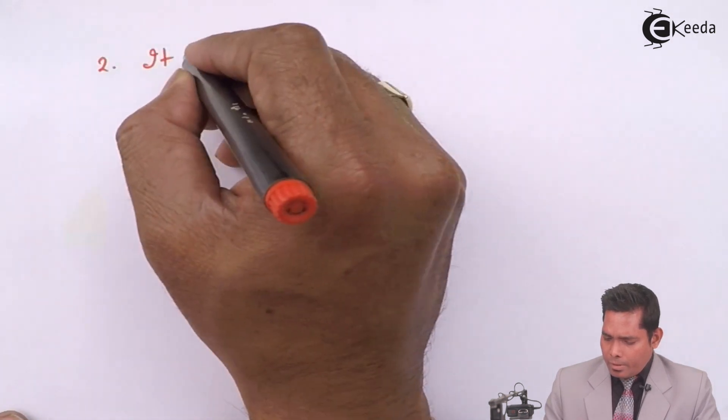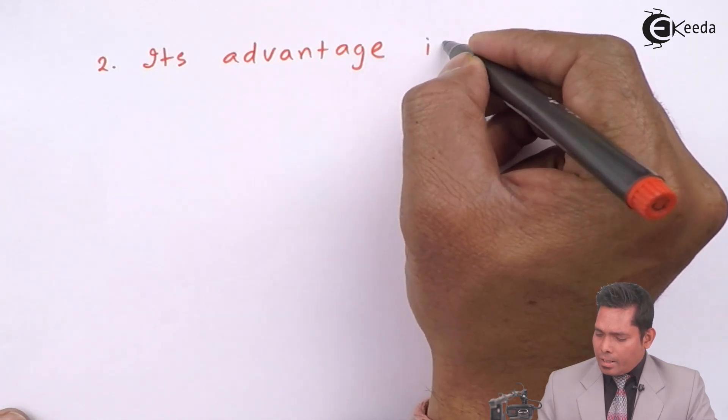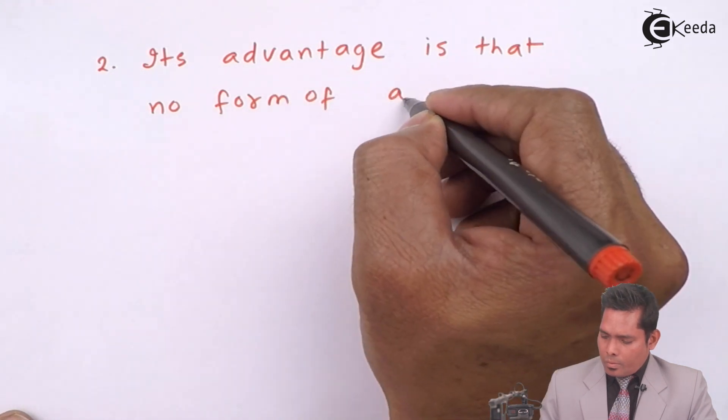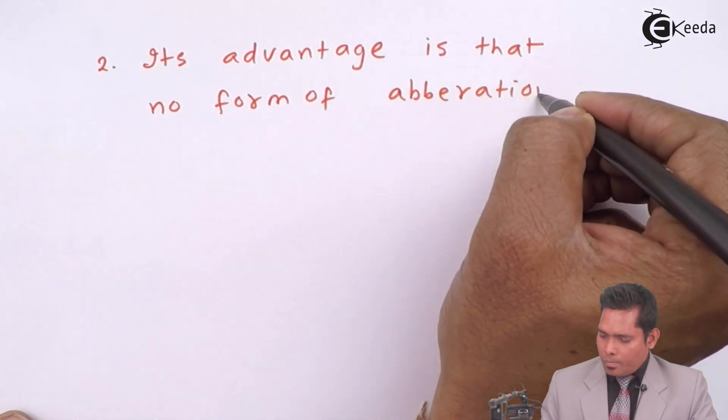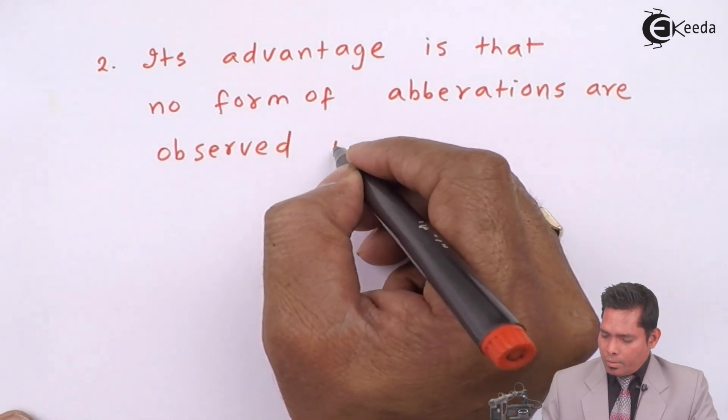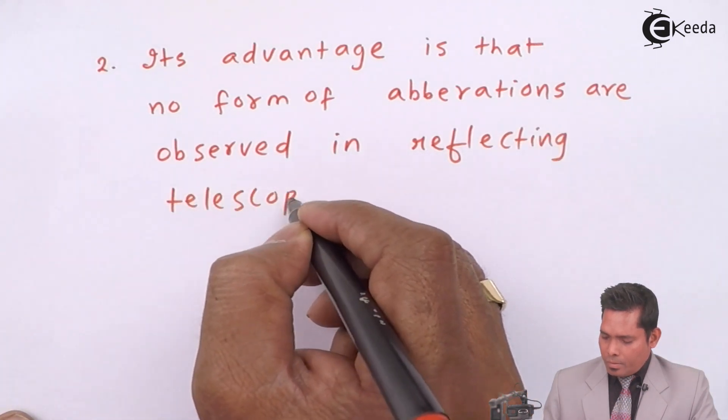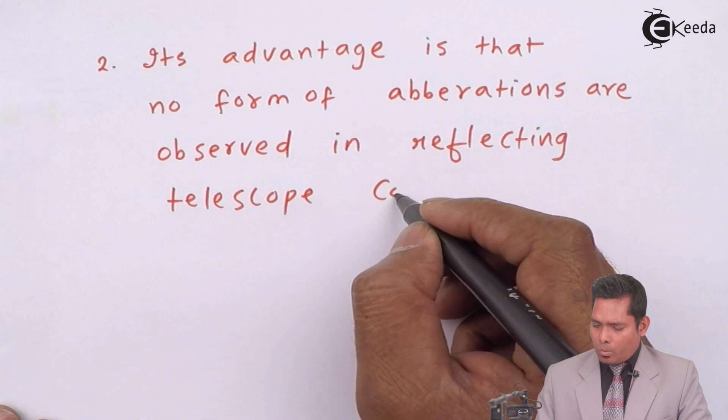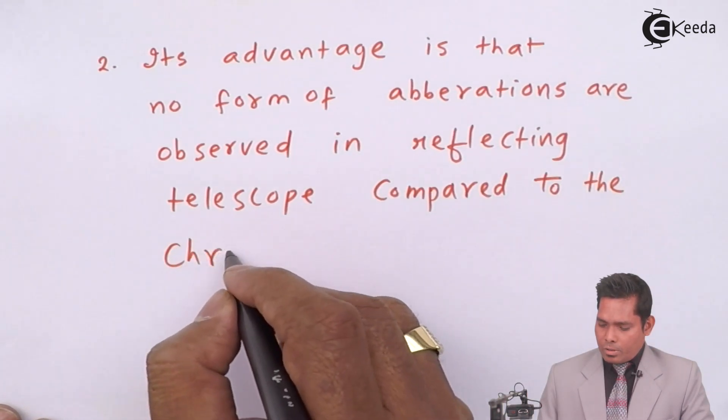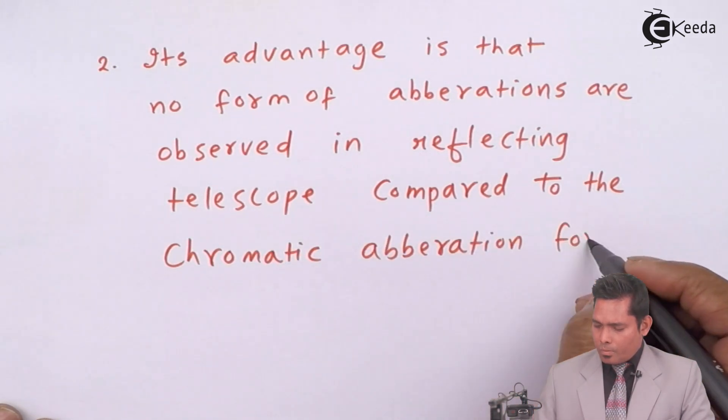Second point: its advantage is that no form of aberrations are observed in the reflecting telescope compared to the chromatic aberration formed in the refracting telescope.